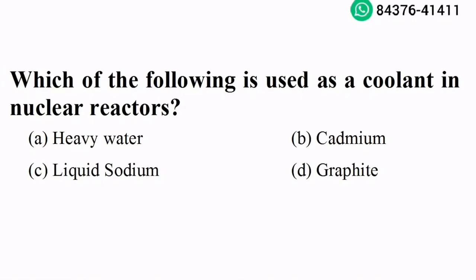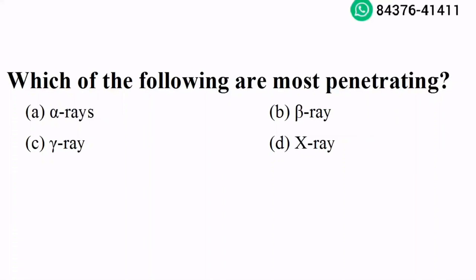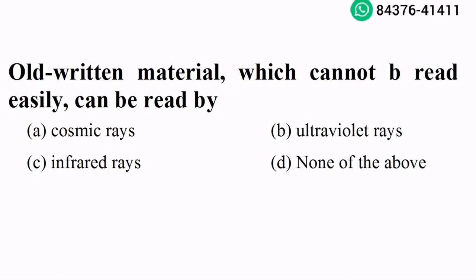Which of the following is used as a coolant in nuclear reactors? Liquid sodium. Option C is the right answer. Which of the following are the most penetrating rays? Gamma rays. Option C is the right answer. Old written material which cannot be read easily can be read by infrared rays. Option C is the right answer.